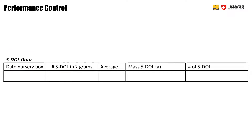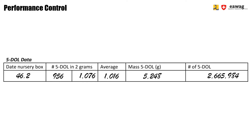During the enumeration process of the five-day-old larvae, there are a couple of values you have to note down in order to track the size of the larvae taken from the nursery boxes, to see how many five-day-old larvae you have harvested each day, and to combine that with the number of eggs placed over the nursery boxes before the start of the process. First, note down the date of the nursery boxes whose content you have combined. Then note down the number of five-day-old larvae counted in the two samples of two grams. From the two samples, note down the average count, then the total mass of the five-day-old larvae found in the nursery boxes, and the number of five-day-old larvae calculated from that mass using the enumeration procedure.